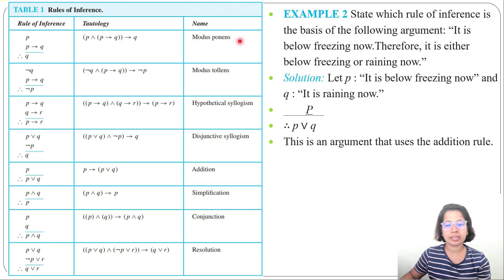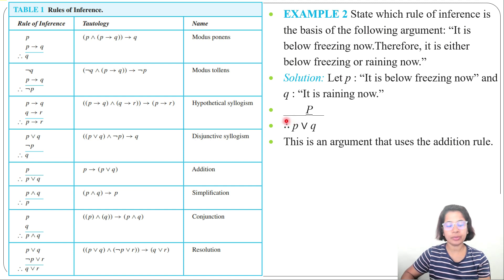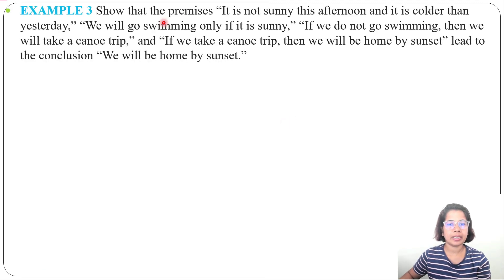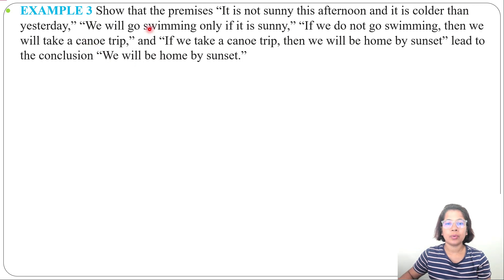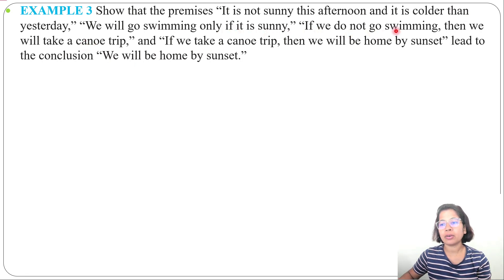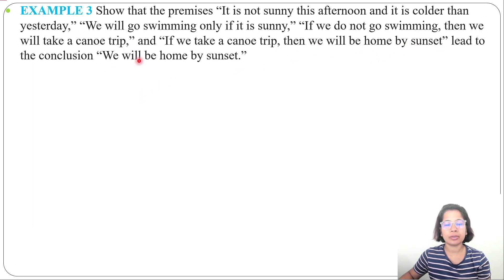In the previous lecture I already discussed the rules of inference — these are important. In Example 3, the premises are: it is not sunny this afternoon and it is colder than yesterday; we will go swimming only if it is sunny; if we do not go swimming then we will take a canoe trip; and if we take a canoe trip then we will be home by sunset. The conclusion is: we will be home by sunset.